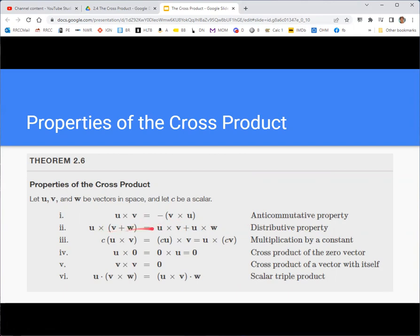It is distributive over a vector sum or difference. It is distributive with a scalar multiplication. If you do the cross product of any vector with zero, the result is the zero vector. The zero vector is just a vector that has zero for every component. If you take the cross product of any vector with itself, it's zero. That's interesting.